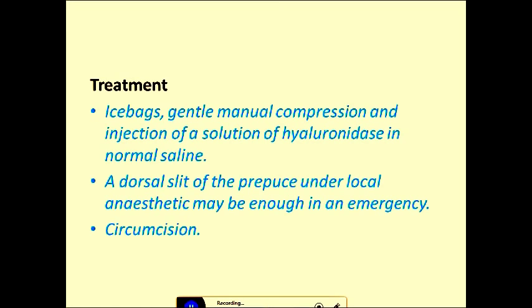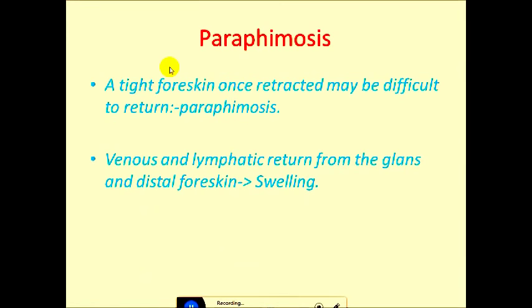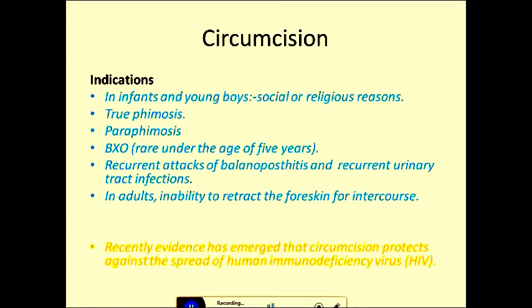If conservative management fails, a dorsal slit of the prepuce under local anesthesia may be sufficient. In emergency presentations, a slit over the dorsum reduces the edema and treats it temporarily. If all methods fail, the treatment is circumcision. So circumcision is a treatment for both phimosis and paraphimosis.